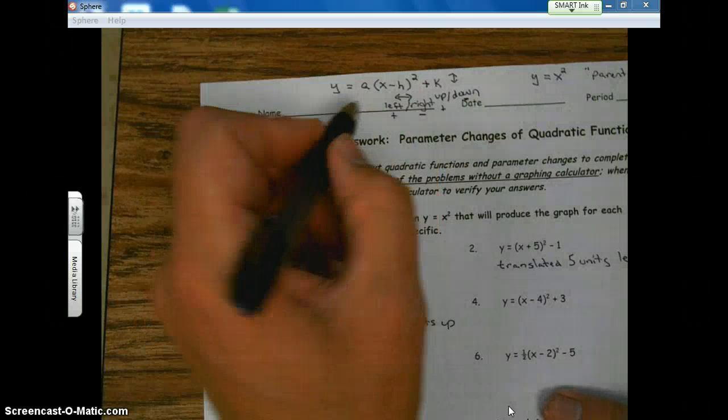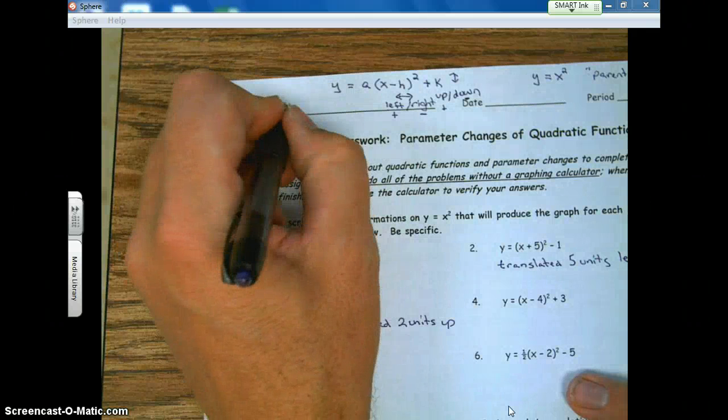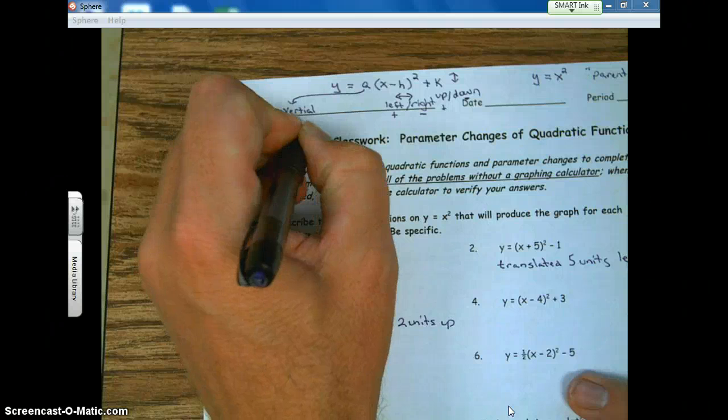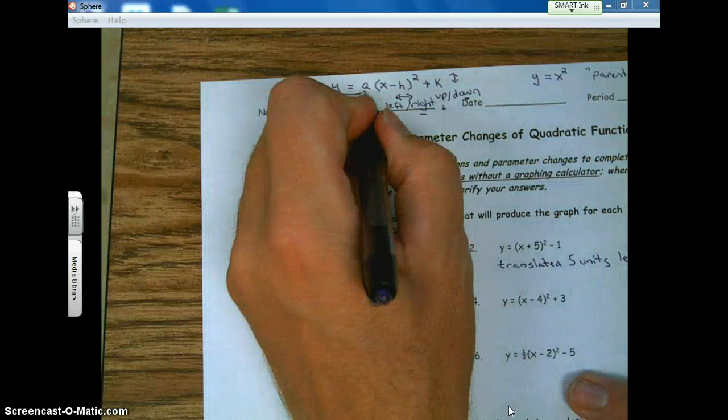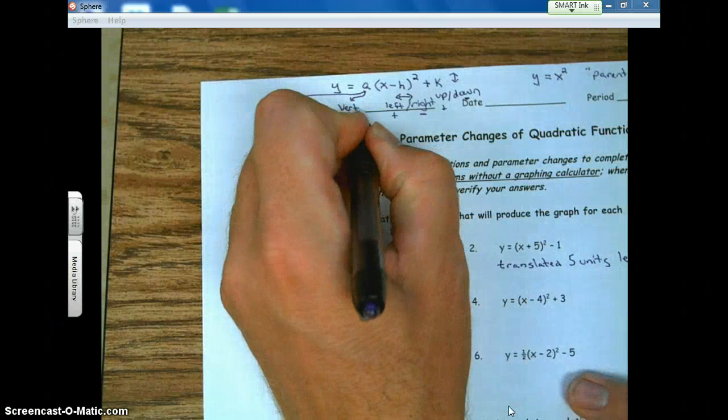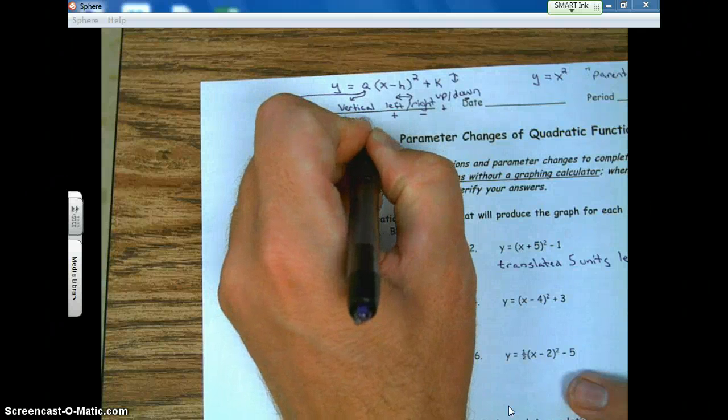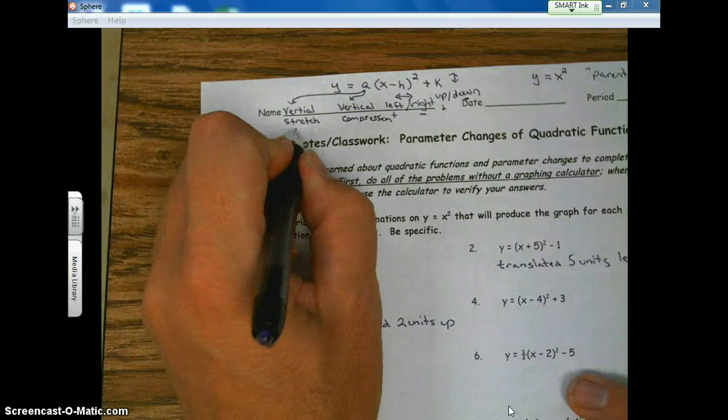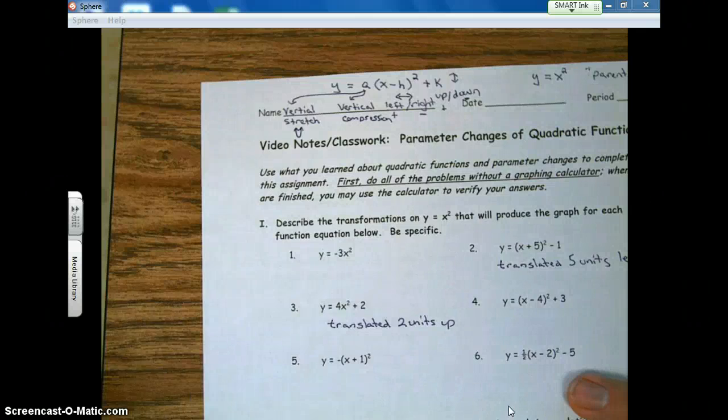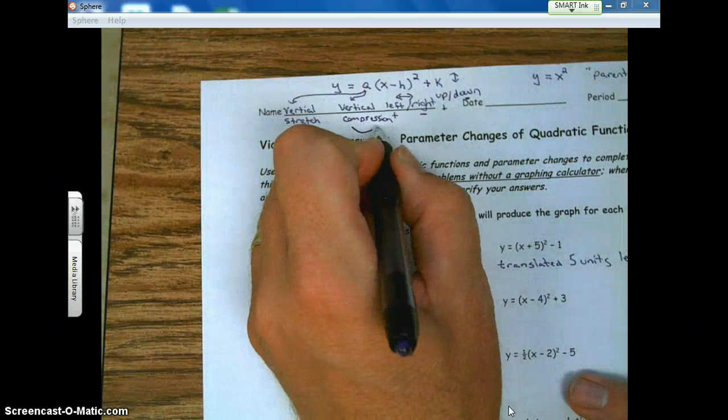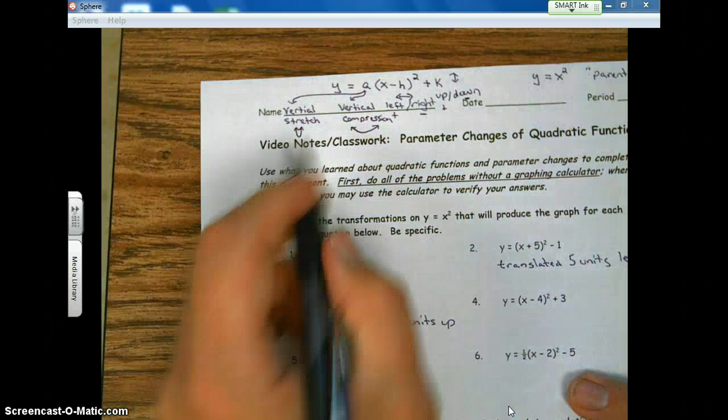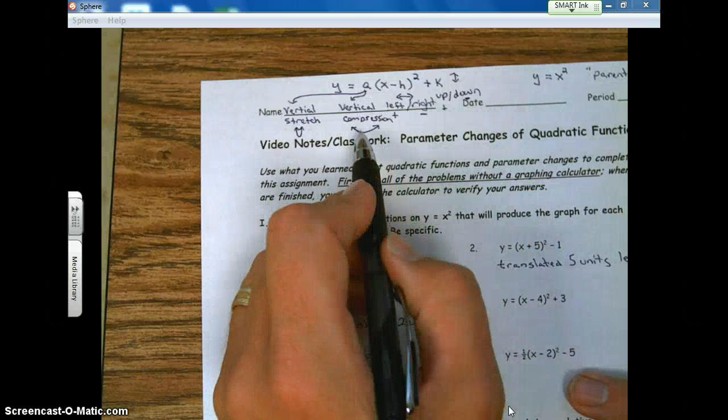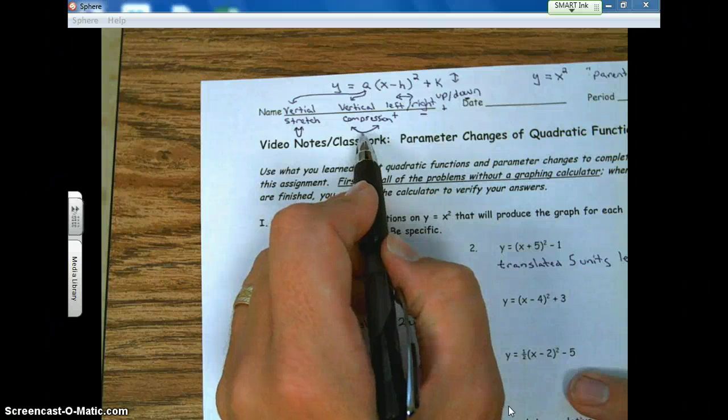Next parameter, a. a will either be, let me write it over here, a is either going to be a vertical stretch, or a will be a vertical compression. Stretch, the quadratic or the graph will appear to be narrow. Compression, the graph will appear to be wider. Because all the y values are getting multiplied by a scale factor of a.